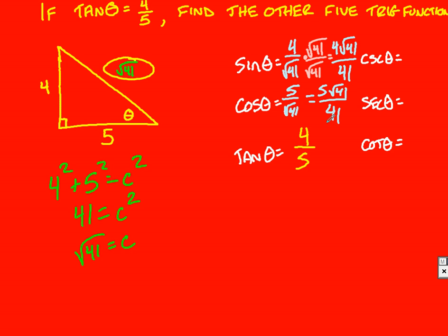I already was given tangent. Now on the right-hand side, all of these, I just need to flip the fractions. I'm not going to flip my new fractions that I've already rationalized. Always flip your original fractions because that makes things a lot easier. Root 41 over 4, root 41 over 5, and 5 over 4 are your answers.